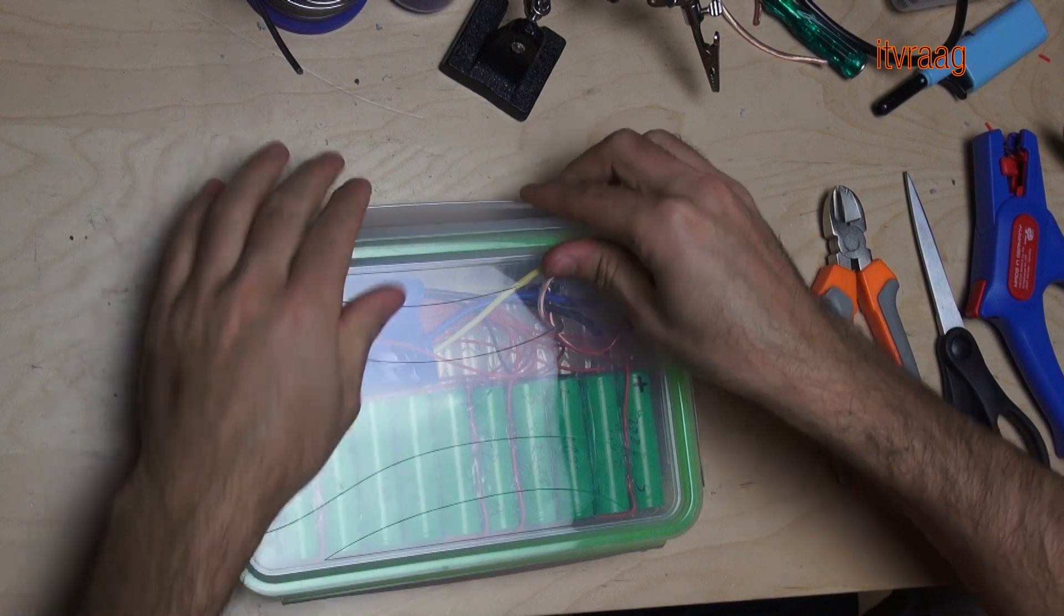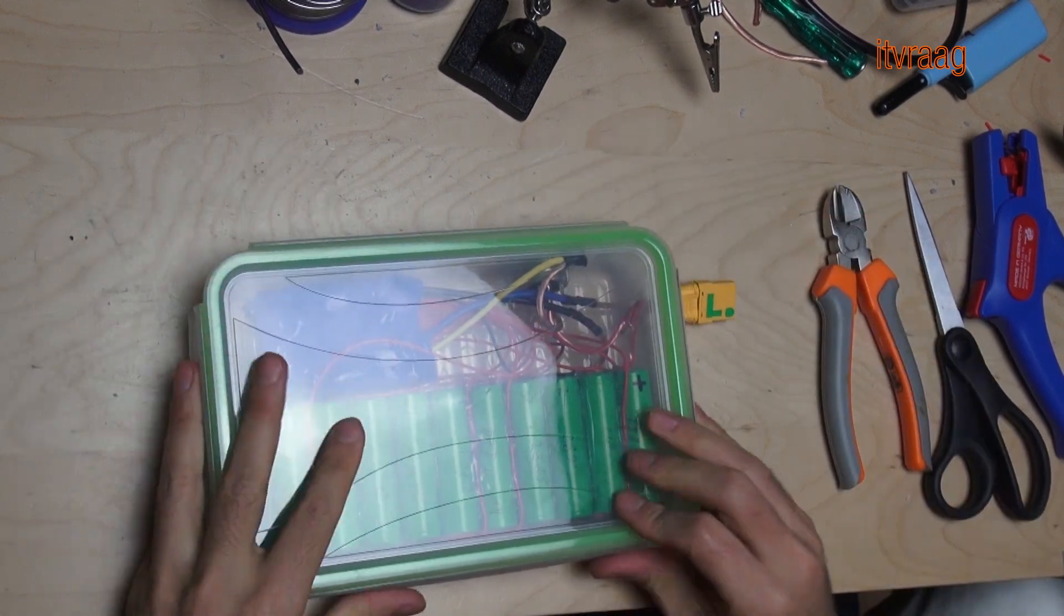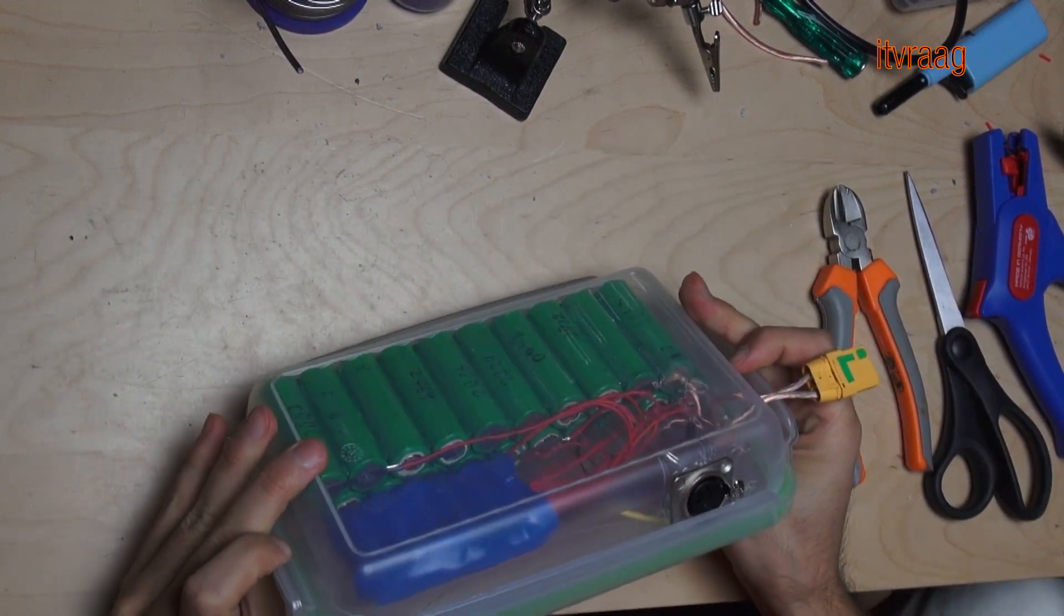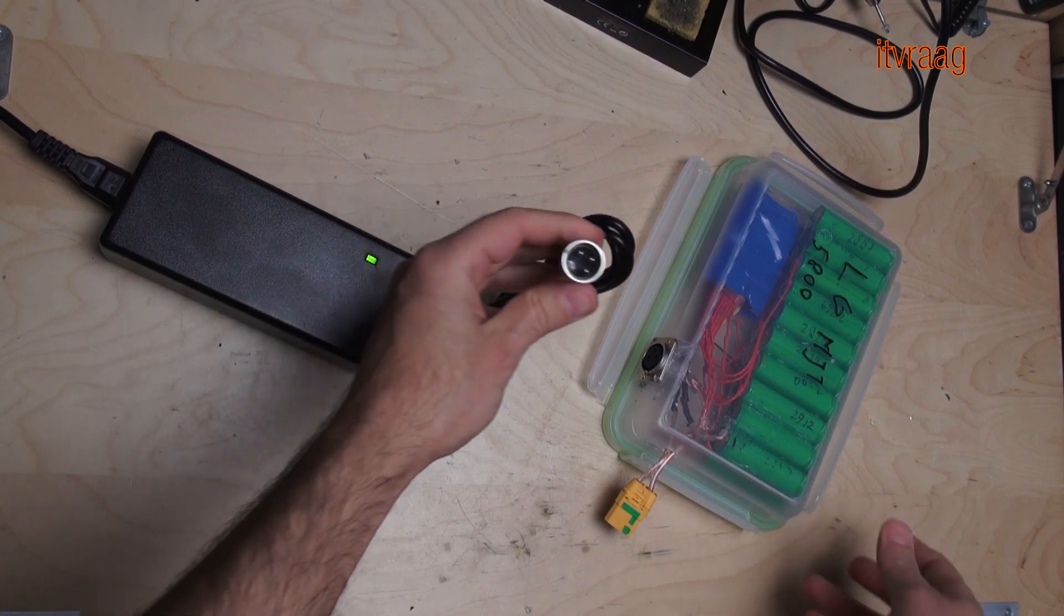This is the end result. In this video I'll show you how to make a 10-cell battery pack using a BMS and a dedicated charger from an electric bike.